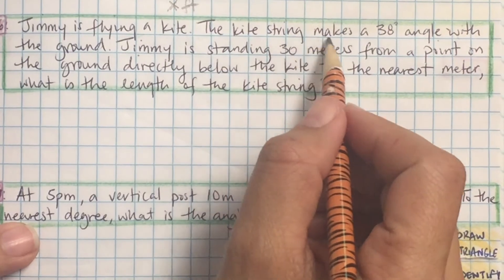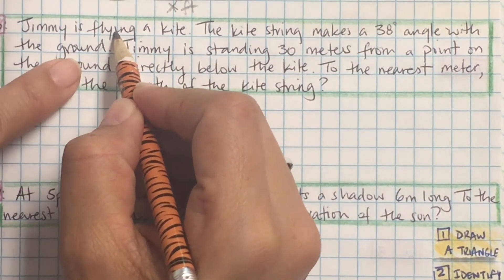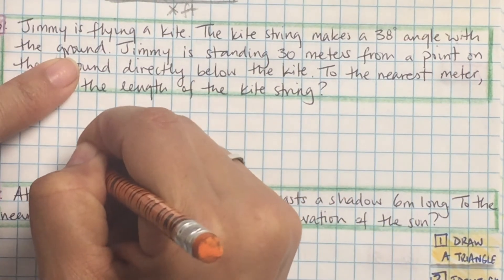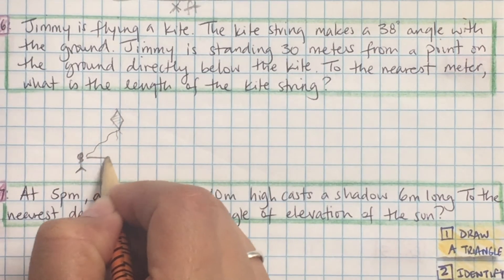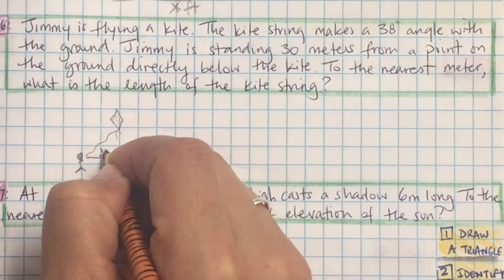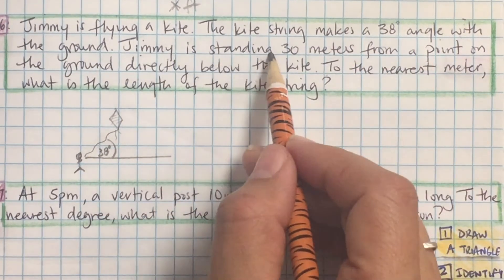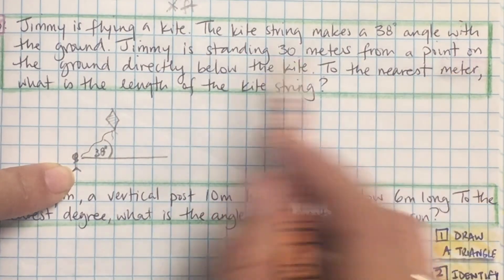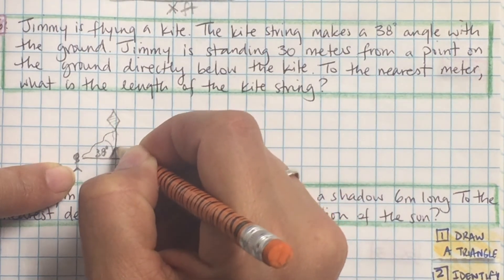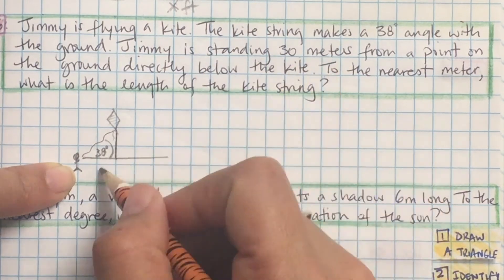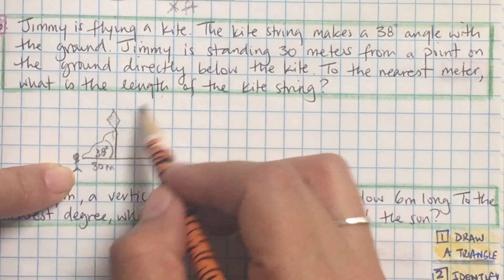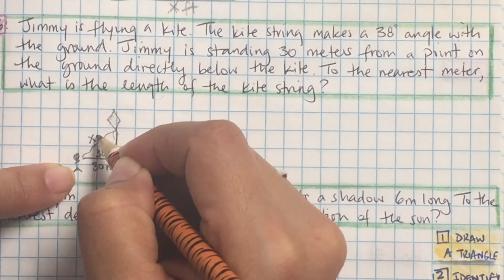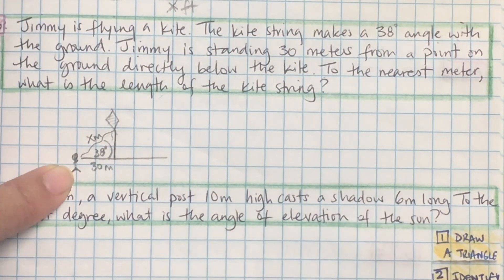Jimmy is flying a kite. The kite string makes a 38 degree angle with the ground. Listening check: color in the 38 degrees. Jimmy is standing 30 meters from a point on the ground directly below the kite, so that's 30 meters labeled on the base. To the nearest meter, what is the length of the kite string? That's X. I have an angle, a known side, and the unknown — that's all you need. That's the first step.